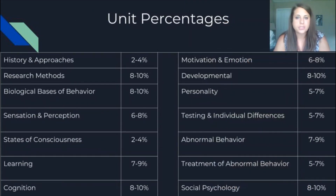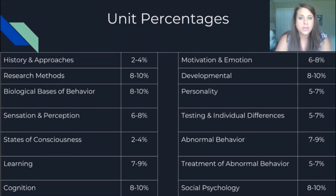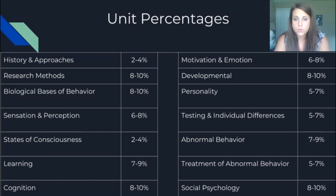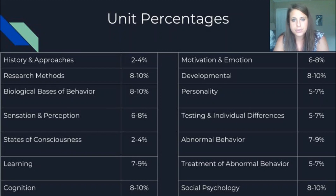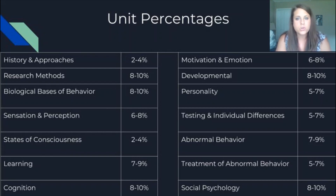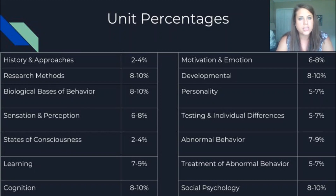Unit percentages break down as follows — the College Board tells you ahead of time what's going to be on the AP test. The first unit, history and approaches, makes up 2–4% of the AP test, meaning on the 100 multiple choice questions, 2–4 questions will most likely be on history and approaches. Research methods then makes up 8–10%, so you can expect 8–10 questions about research methods. I show you this to help guide your studying — not to say you shouldn't study history and approaches, but spend your time on the things that are more emphasized on the AP test.